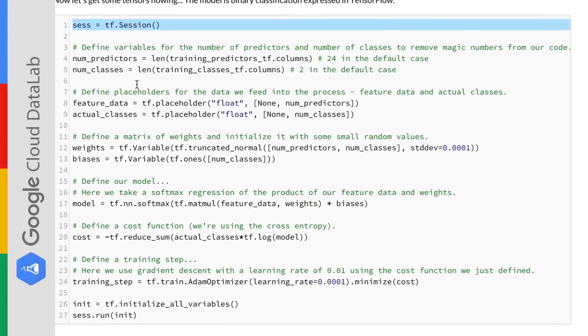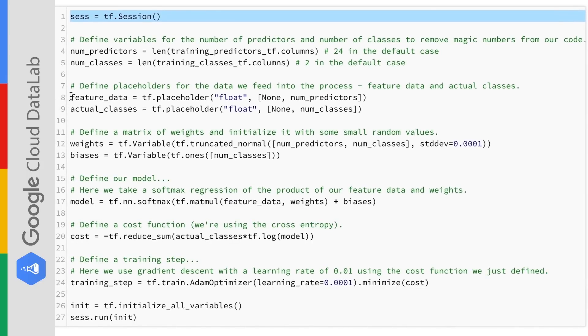Now let's define our graph. We're going to need two things: variables and operations on the variables. Here we define our input and output data as placeholders. Now that simply means those are variables without specific values assigned. We'll add those later when we train and run our model. We also define the weights and biases for our model as variables at this point.